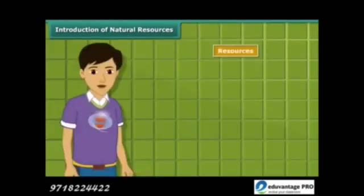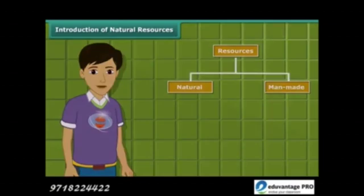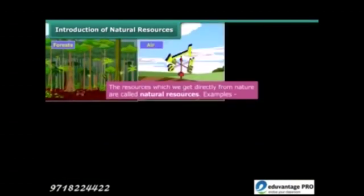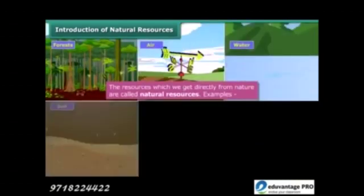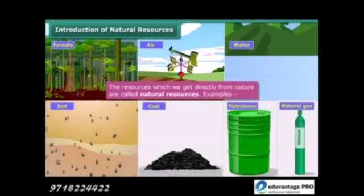Resources are of two types: natural and man-made. Natural resources such as forests, air, water, soil, coal, petroleum and natural gas are directly obtained from nature.